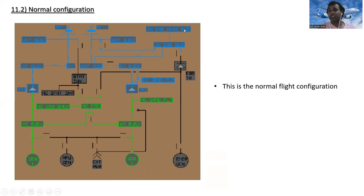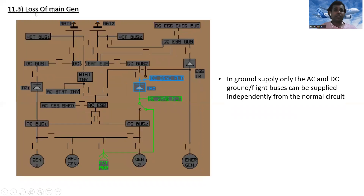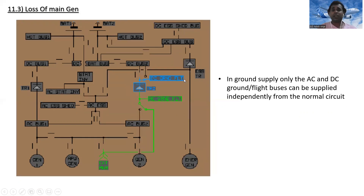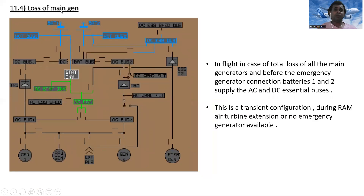For loss of main generator in ground supply only: the AC and DC ground flight buses can be supplied independently from the normal circuit. External power goes to the AC ground flight bus and through the transformer device to the DC ground flight buses.